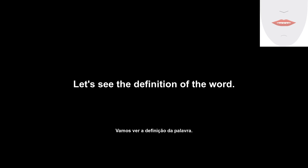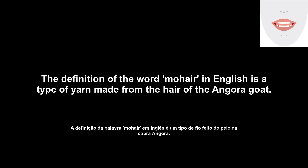Mohair. Let's see the definition of the word. The definition of the word mohair in English is a type of yarn made from the hair of the angora goat.